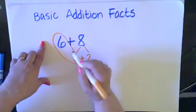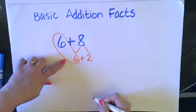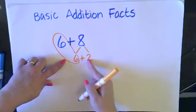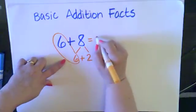Now I have made a double, so I have 6 plus 6 is 12, and then I add 2 more, and that gives me 14.